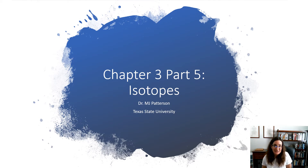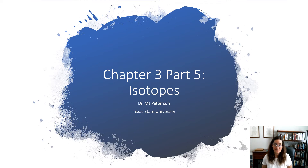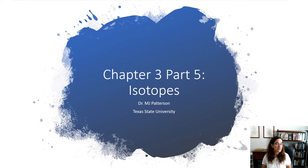The existence of isotopes is one of the things that makes Dalton's atomic theory not quite exact. In Dalton's atomic theory he said that all of the atoms in a particular element are identical, but we know now that certain versions of the atoms of an element will have different numbers of neutrons present. That means they're going to have different masses and some very slightly different physical properties, and we're going to call those different versions isotopes.